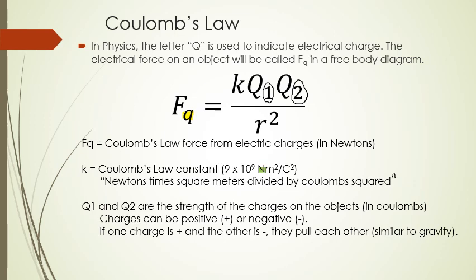Here's really the key thing I should have had in the pogle — the key sentence of these notes: opposites attract, likes repel. When it comes to electricity, if one charge is positive and the other is negative, they pull each other towards each other. If both are positive or both are negative, they push each other away. This is where it gets tricky because in our physics equations, positive and negative means direction, not electrical charge.